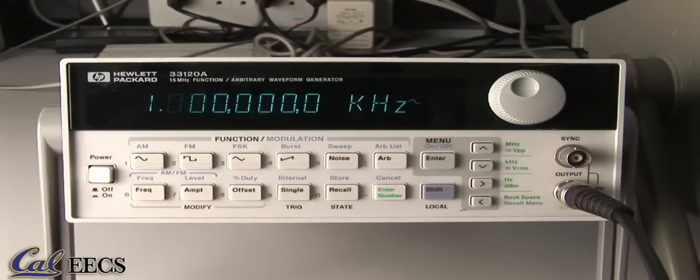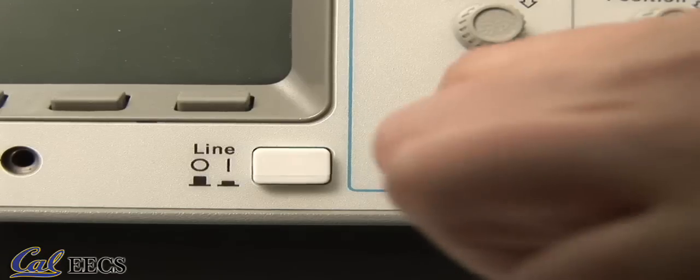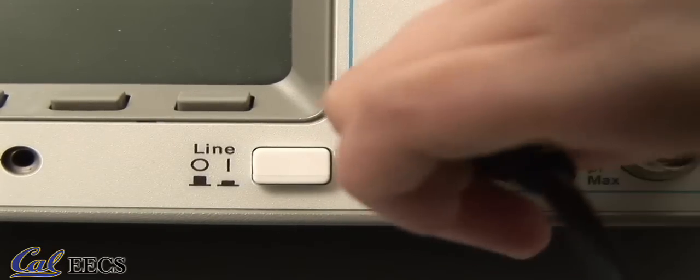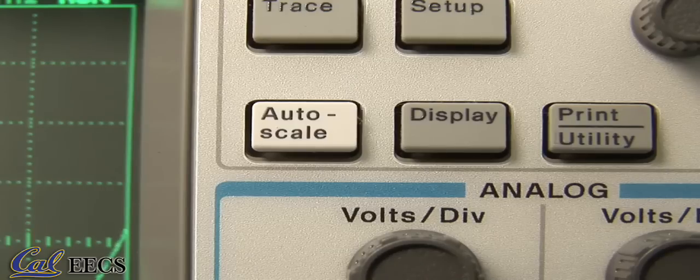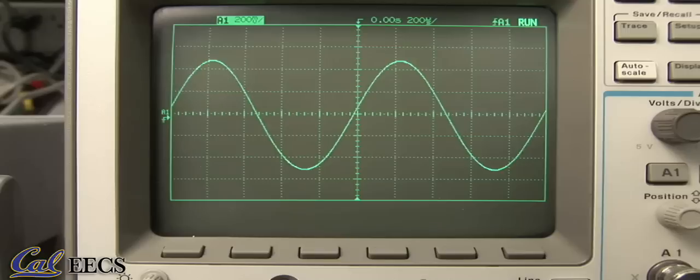Set up the function generator to produce a 1 kHz, 1 volt sine wave. Connect the output of the function generator to the oscilloscope channel A1. Now, simply press the auto-scope button to display the waveform.